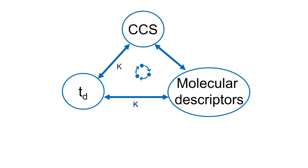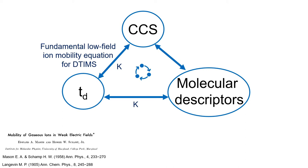In ion mobility experiments, we measure arrival times — usually centroid values of arrival time distributions — from which we can calculate the drift time, knowing relevant instrumental parameters. For the drift tube technology, the first ion mobility device ever invented, a mathematical formula exists that connects drift time measurements with CCS values through the mobility constant.